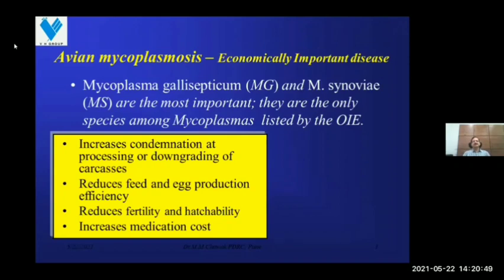Avian mycoplasmosis is a major factor causing avian respiratory disease complex, which is very important in terms of economics because it causes heavy losses in production and overall efficiency. Mycoplasma gallisepticum and Mycoplasma synoviae are the most important species, listed by the OIE. Mycoplasmosis increases contamination at processing, downgrades carcasses, reduces feed and egg production efficiency, reduces fertility and hatchability, and increases medication costs.